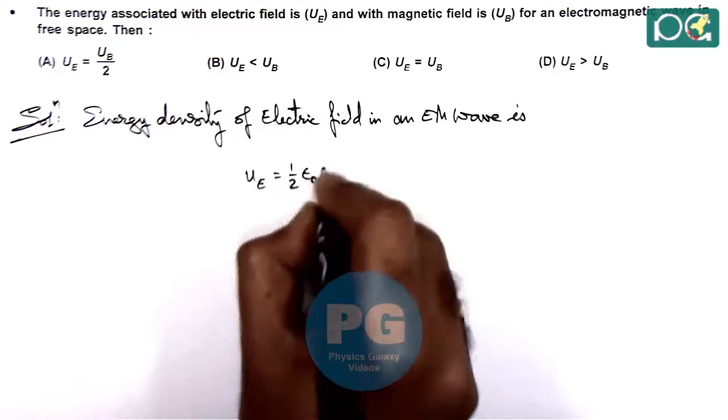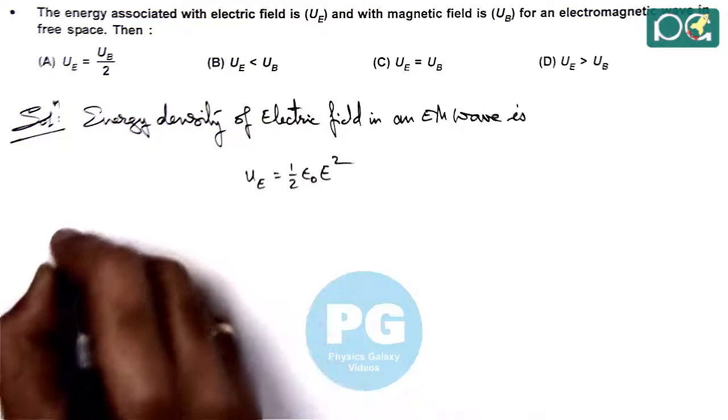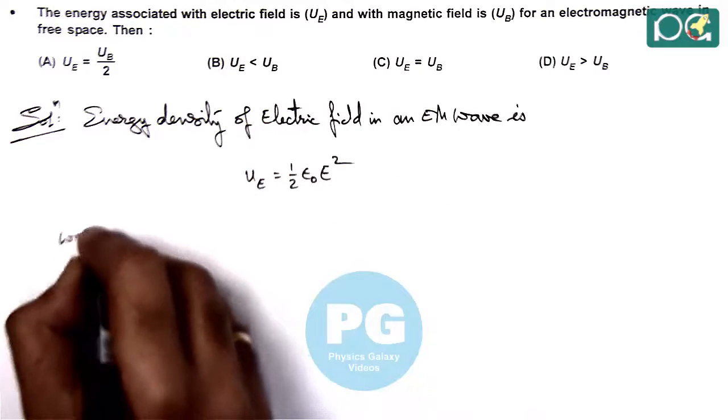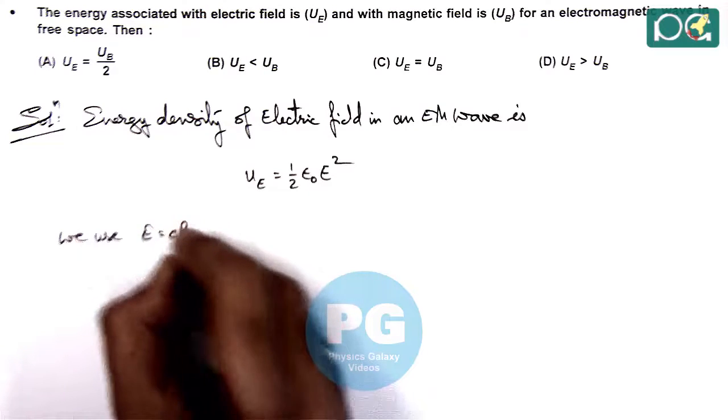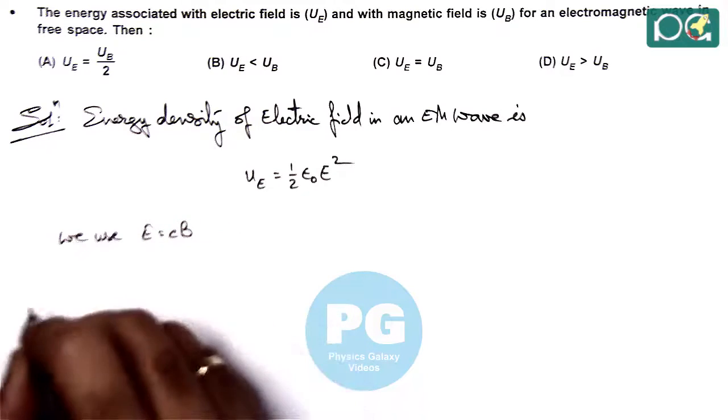We use the electric field can be written as Cb where C is the speed of light and B is the magnetic field strength. So here we are getting Ue as half epsilon-not C square B square.